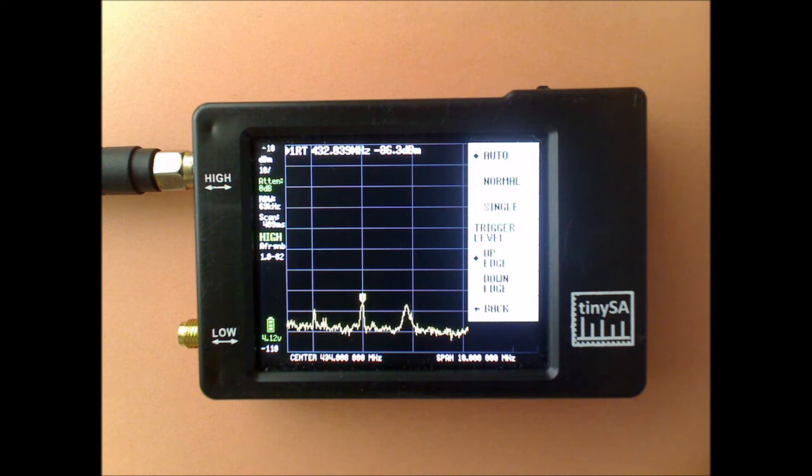For instance, you see sometimes some peak appearing, but they're never long. So I would like to trigger the measurement so that I capture this sporadic signal.